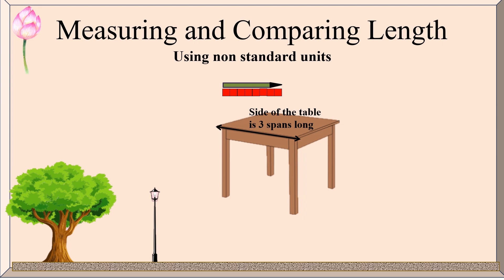Now let us check how many cubes long the pencil is — you have to count how many cubes there are. There are eight, so the pencil is eight cubes long. Next is cubit — cubit is the distance from the elbow to the tip of the middle finger. It was commonly used in ancient times for building structures like the pyramids of Egypt.